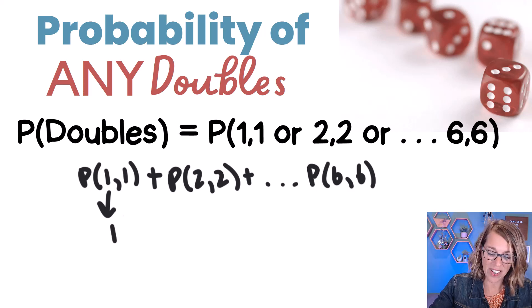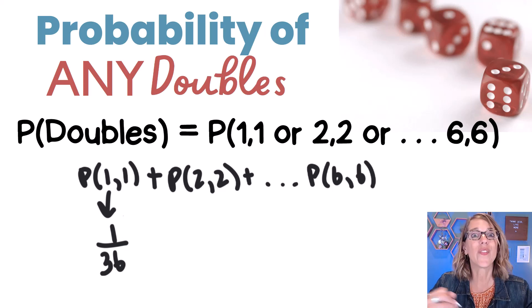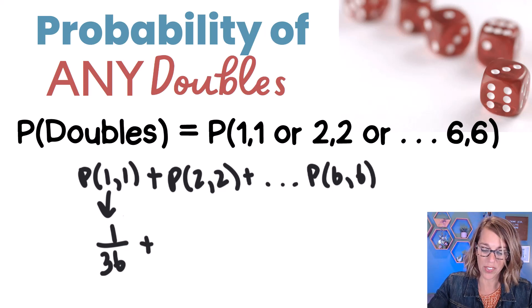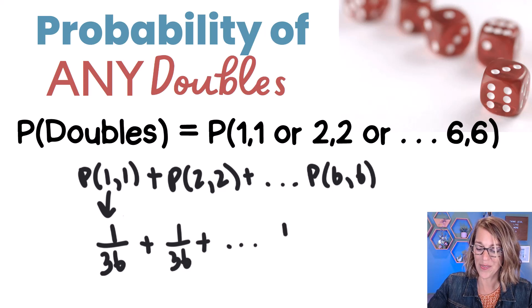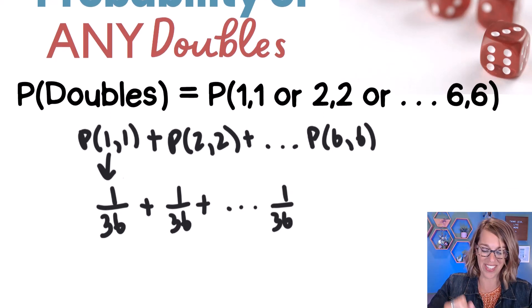So we end up with one out of 36 and I'm going to get the very same probability for double twos, for double threes, for double sixes, all the way down the line. So there are six of these.